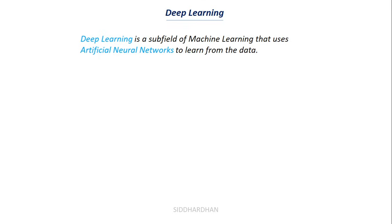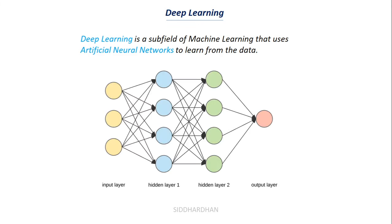Now let's understand deep learning. Deep learning is a subfield of machine learning that uses a special type of algorithm called artificial neural networks to learn from data. As shown in the pictorial representation of an artificial neural network, these networks are modeled from the human brain — specifically from the neurons present in our brains. There are numerous interconnected neurons in our brain; each neuron processes information and sends its output to another neuron, and this same concept is used in artificial neural networks — they are a mathematical model connected like neurons in our brain.